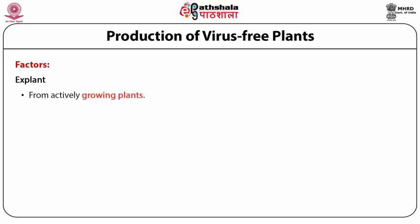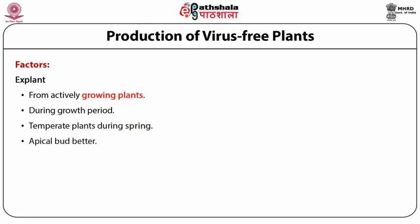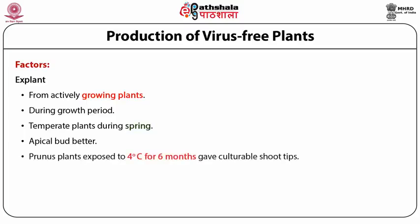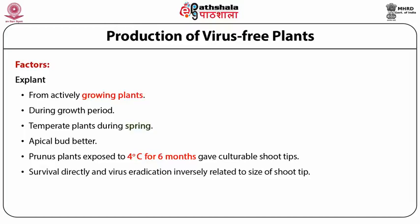The explant should be taken from actively growing plants during the growth period. In temperate plants such as apple and pears, this should be done during spring. Apical meristems are available in the main shoot as well as on lateral shoots or axillary buds, but apical buds are preferred. Survival directly and virus eradication is inversely related to the size of the shoot tip — the smaller the shoot tip, the better the chances of virus eradication, but the lower the chances of survival.